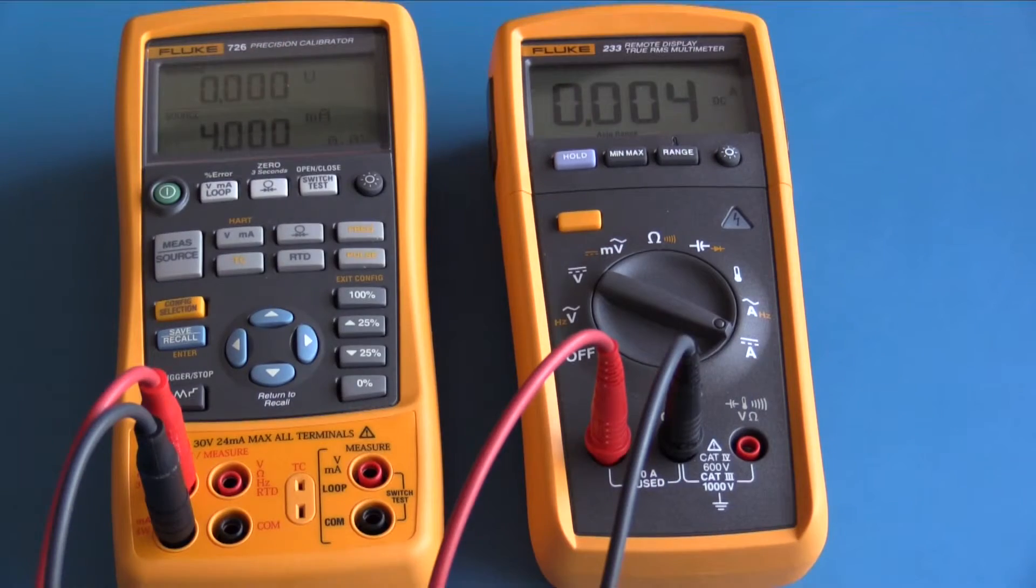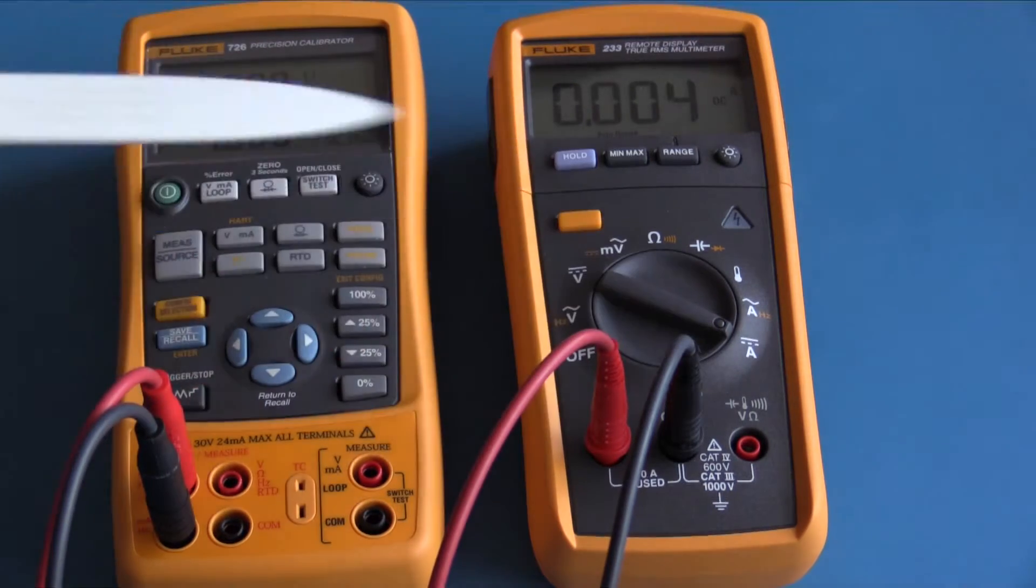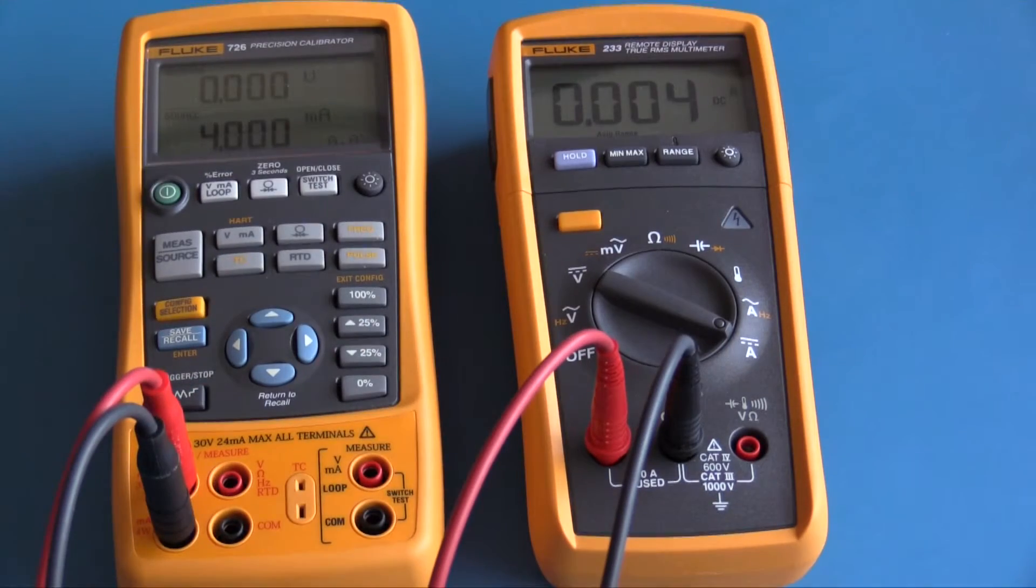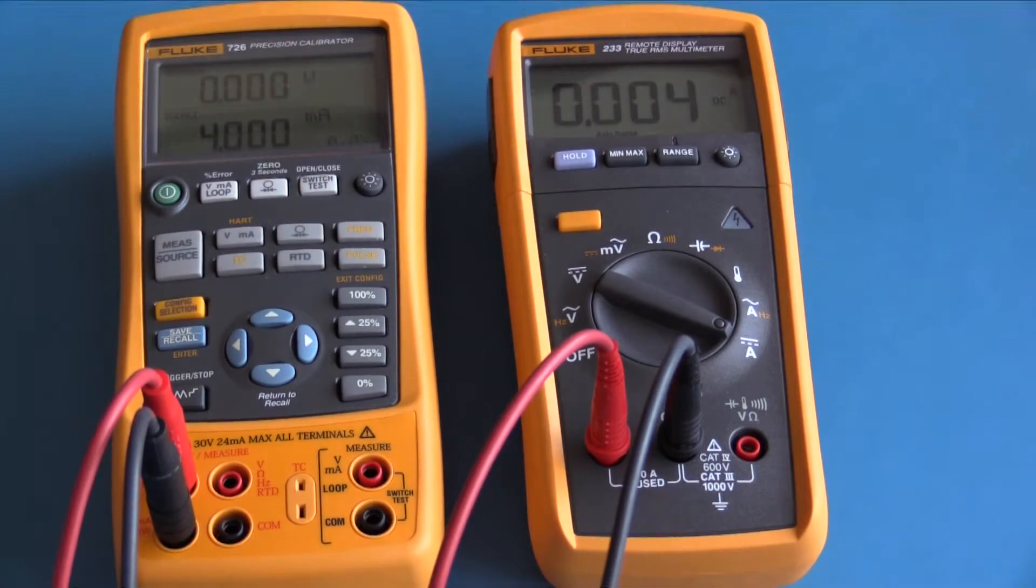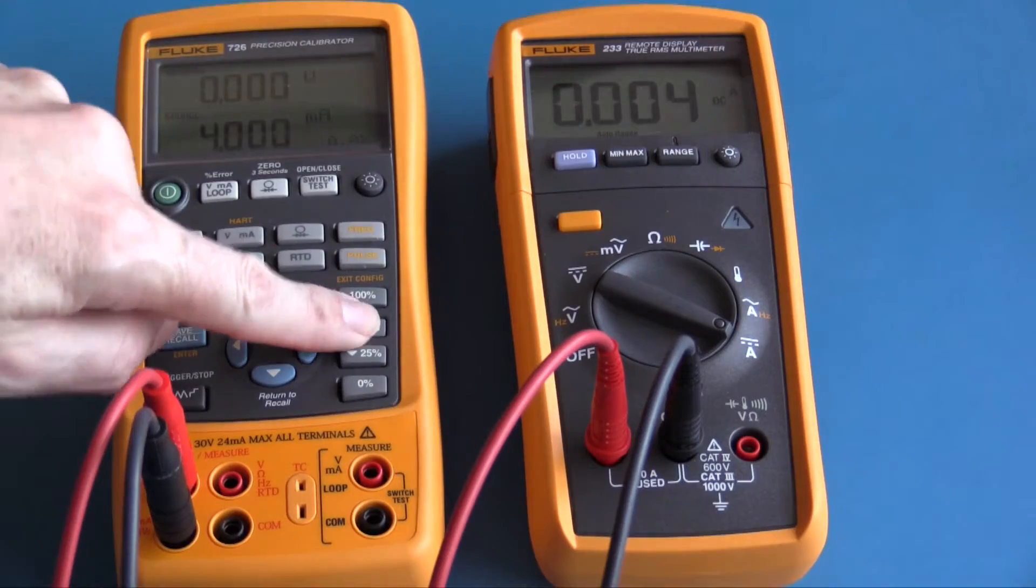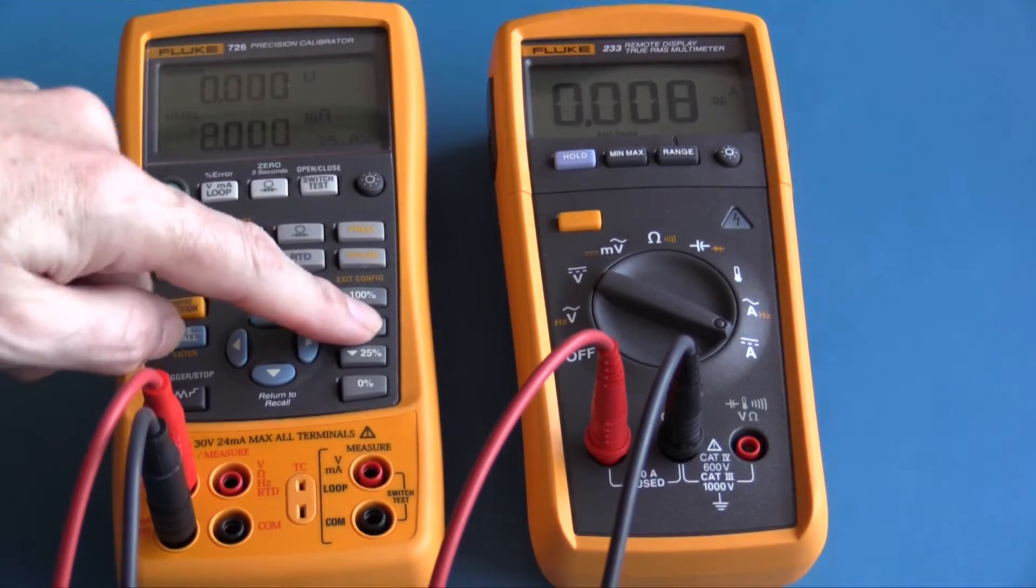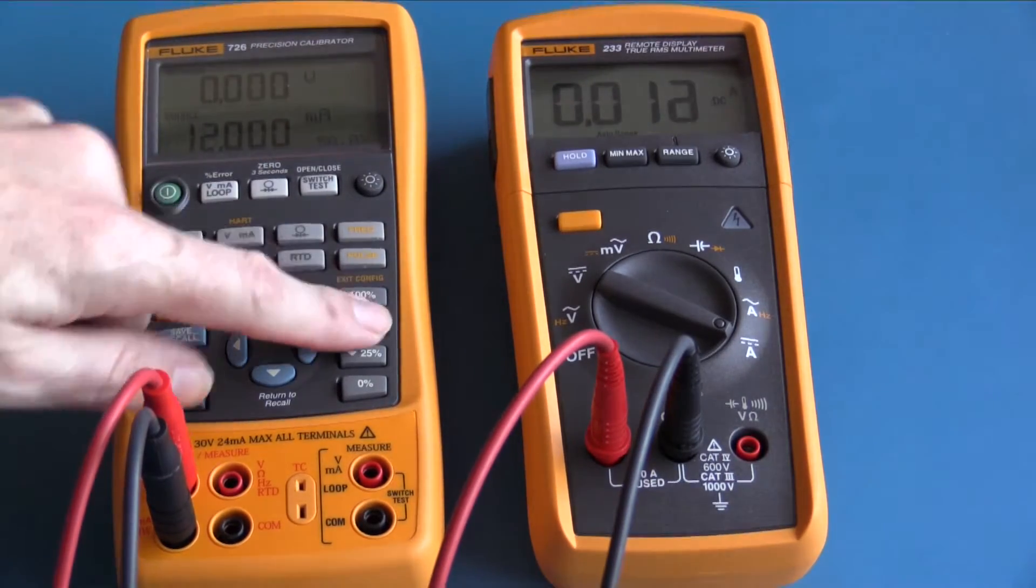To demonstrate amps, I have selected DC amps. My Fluke 726 is set up to source 4 milliamps. The Fluke 233 is showing 4 milliamps. This is at the end of the Fluke 233's milliamp range. Its resolution is only 1 milliamp DC. This is 8 milliamps, 12 milliamps, 16 milliamps, and finally 20 milliamps. Although we're at the limit of the Fluke 233's measurement capability in milliamps, it is still quite accurate.